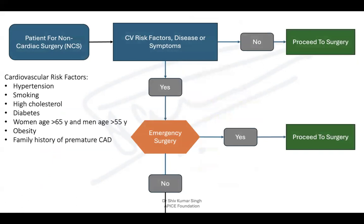When you get a patient for non-cardiac surgery, you need to look at the cardiovascular risk factors, disease, or symptoms the patient has. These include hypertension, smoking, high cholesterol, diabetes, women over 65 and men over 55, obesity, and family history of premature coronary artery disease. If none of these are present, you can just proceed to surgery.